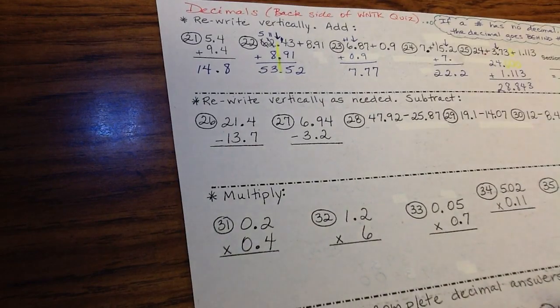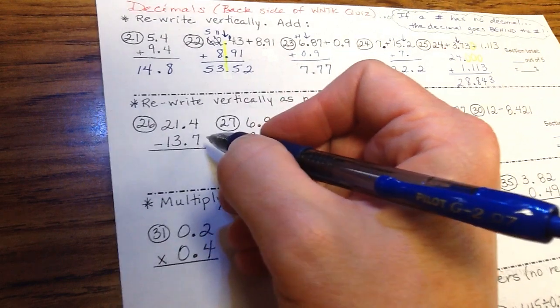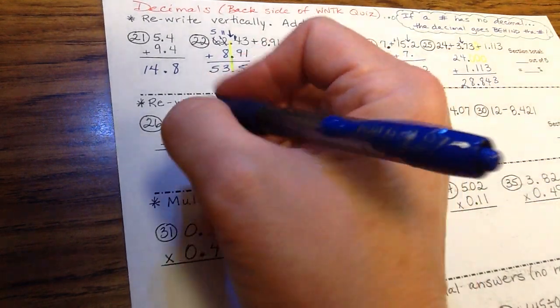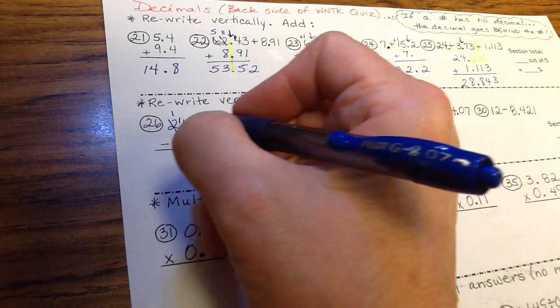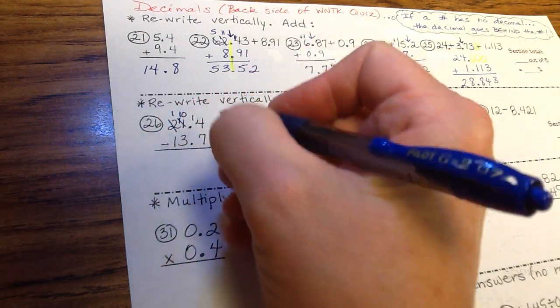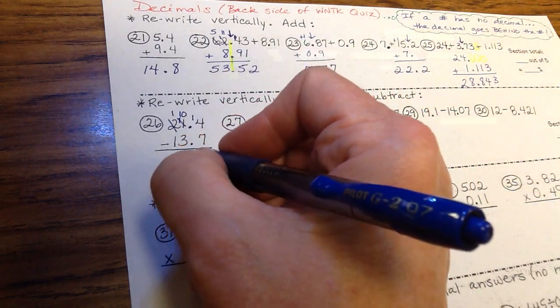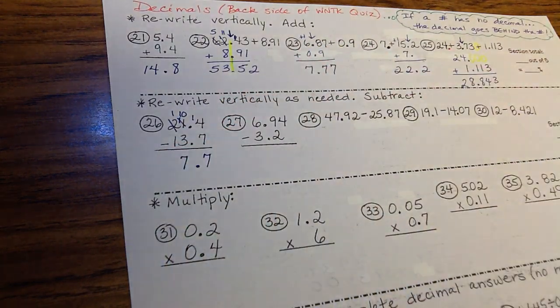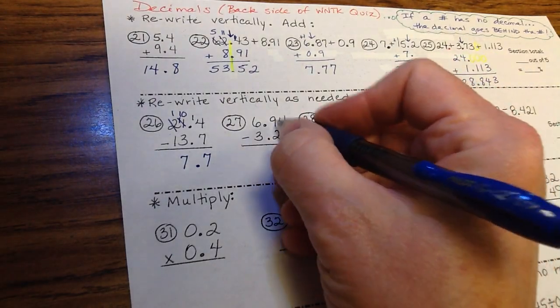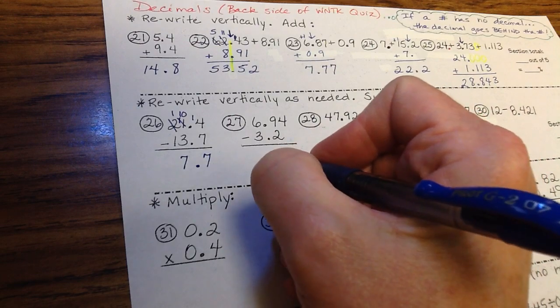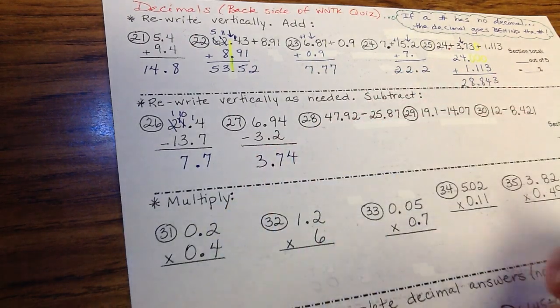On to subtraction. Again, 4 is less than 7, so you're going to borrow. Can't borrow from this neighbor, so you're going to start here. Cross out, 1 less 1. Now the 4 can borrow from the 11. Cross out, 1 less 1. 14 minus 7 is 7. Bring your decimal straight down. 10 minus 3 is 7. And 1 minus 1 is nothing. You don't need anything in front. 7.7 is the answer. 4 minus nothing is 4. 9 minus 2 is 7. Bring your decimal straight down. 6 minus 3 is 3. 3.74.